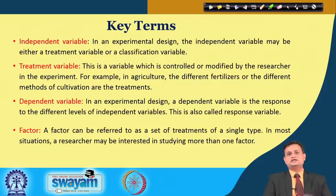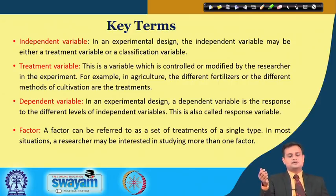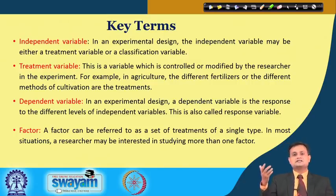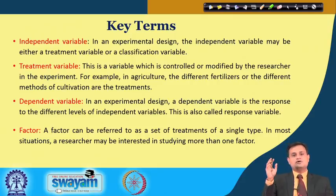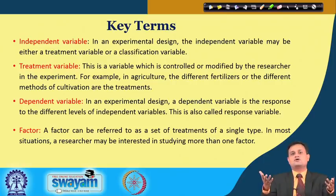Before we go into the details of ANOVA analysis, let us appreciate some technical terms. Number 1: independent variable — this may typically be called a treatment variable or classification variable. Treatment variable is a variable which is controlled or modified by the researcher; for example, temperature or pressure. In agriculture, different fertilizers or methods of cultivation are the treatments. Number 3: dependent variable — in any experimental design, a dependent variable is the response to different levels of the independent variable. As we saw in regression analysis, this is typically called the response variable.